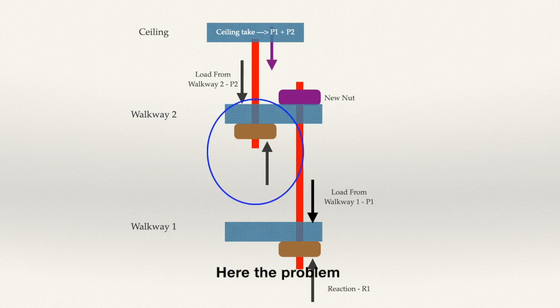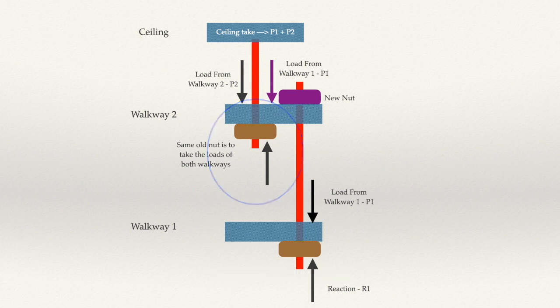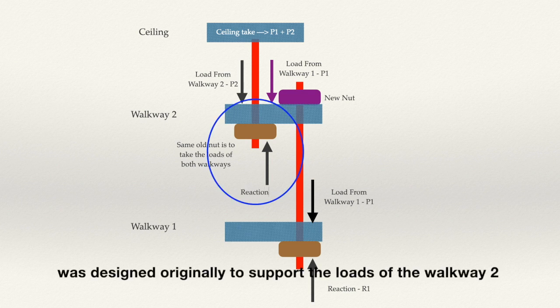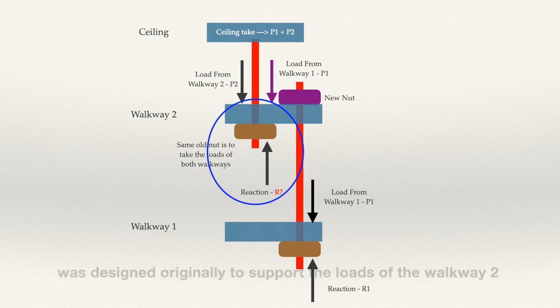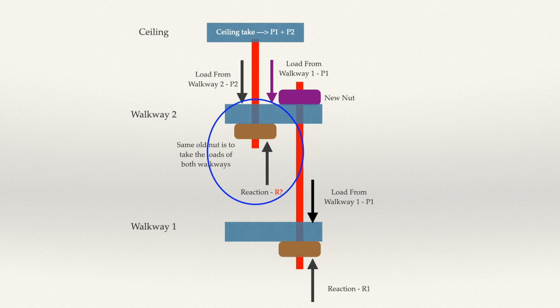Here is the problem. Walkway 2 holds the loads of walkway 1 but its nut under it was designed originally to support only the loads of walkway 2. Can the nuts of walkway 2 support the loads of walkway 1 and 2? No.